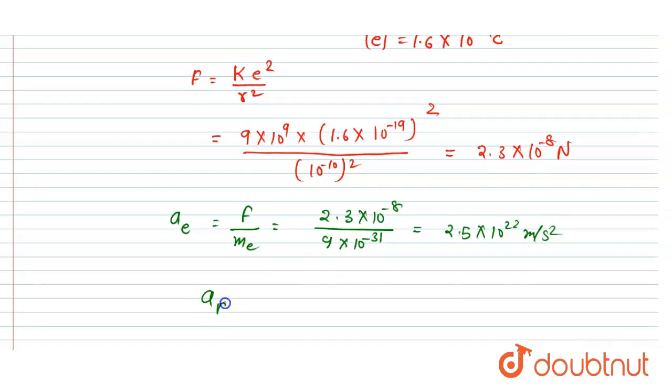And if I talk about the acceleration of the proton, you have to divide the same force by the mass of proton. So the force is 2.3 × 10^-8, and if you see the mass of proton, it is equal to 1.66 × 10^-27.